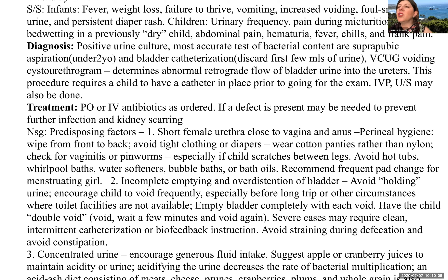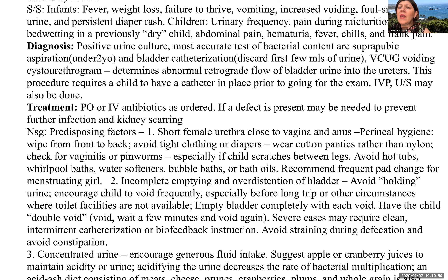Diagnosis: a positive urine culture. Most accurate methods of obtaining urine are suprapubic aspiration under two years of age and bladder catheterization — discard the first few milliliters. Voiding cystourethrograms (VCUGs) can determine abnormal backflow or retrograde flow of bladder urine into the ureters. If hydronephrosis is present — urine going backwards — it can cause recurrent pyelonephritis. When a VCUG is ordered, make sure there is also an order for a catheter to be in place prior to the exam.